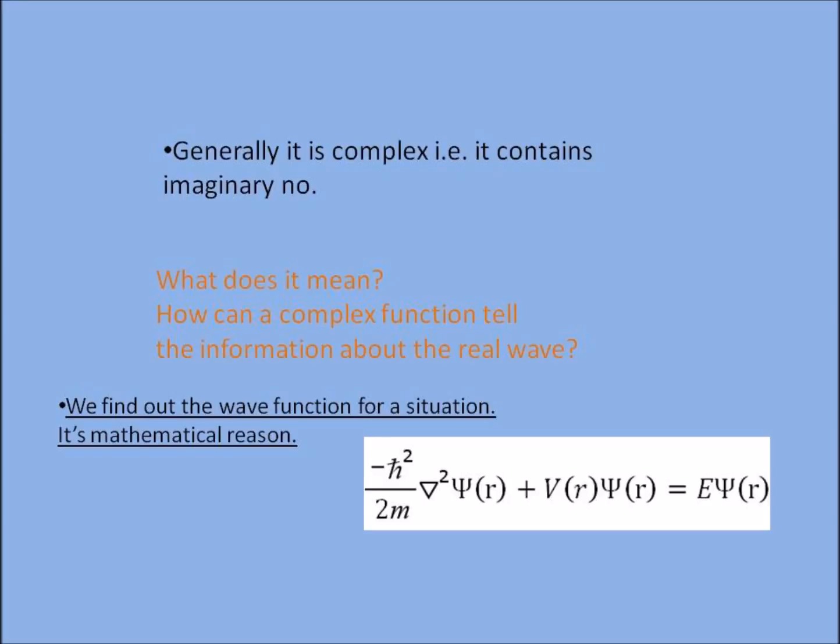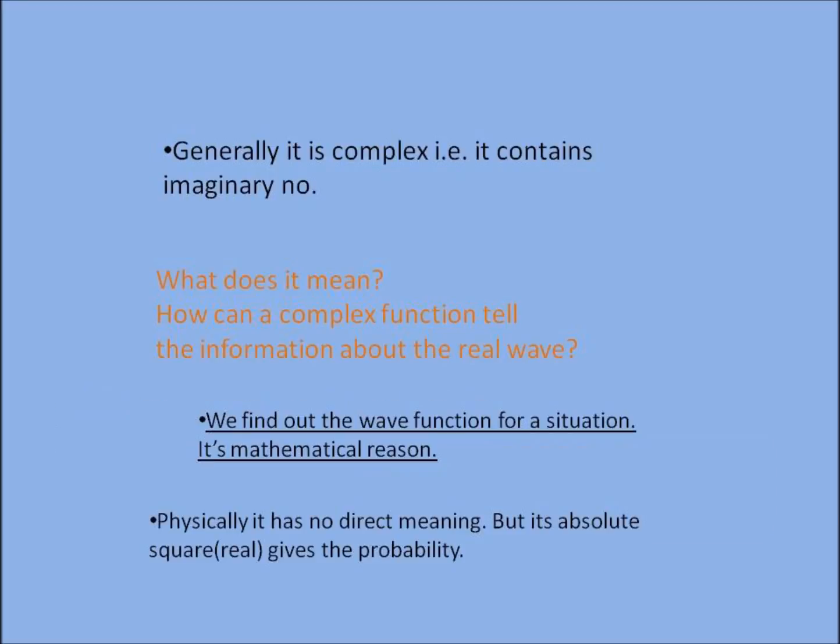It is not necessary that it will always be a complex function, but it is general case. So it may be complex or it may not be, but in more general case it is complex. Physically it has no direct meaning, but its absolute square, that is mod square, gives the probability of finding the particle.